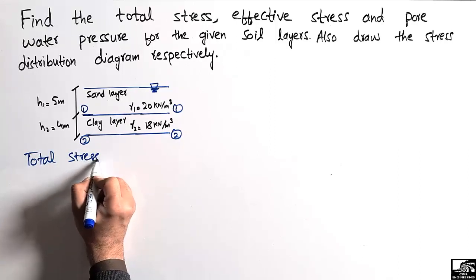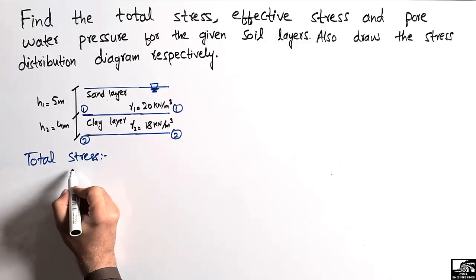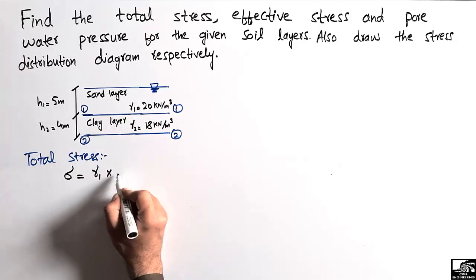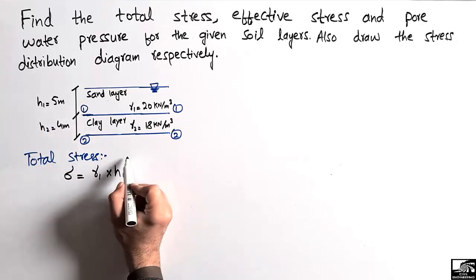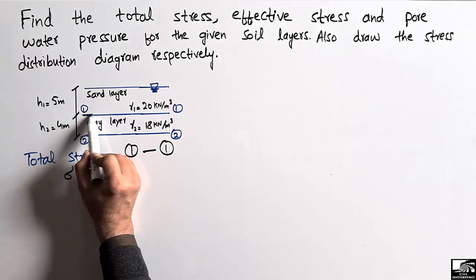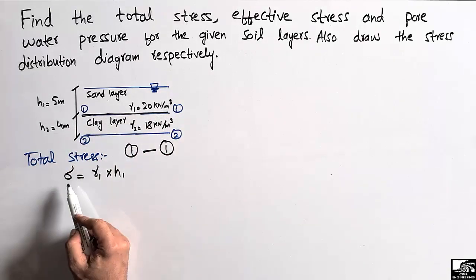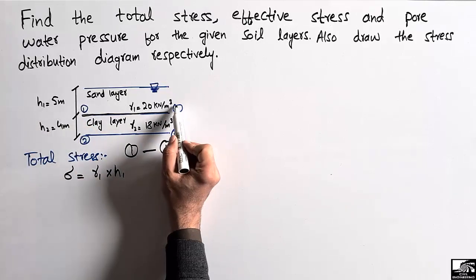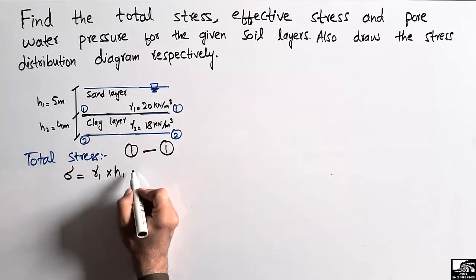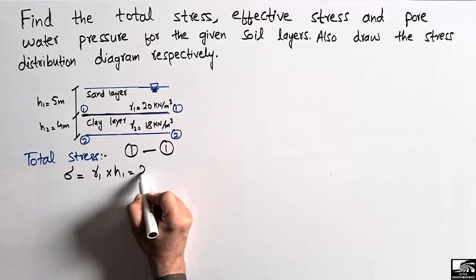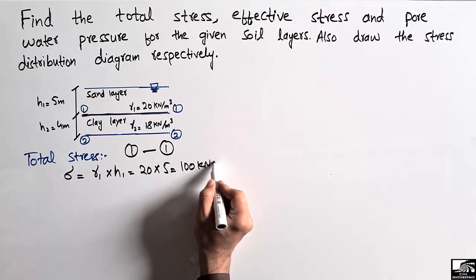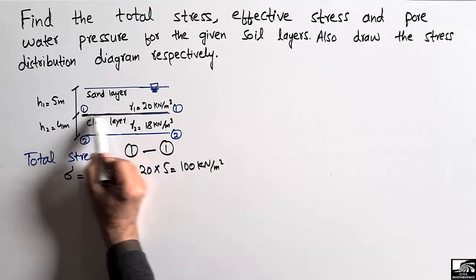First we find the total stress. The total stress sigma equals gamma one multiplied by height h1. At section 1-1, gamma one is 20 kN/m³ and h1 is five meters, so total stress equals 20 multiplied by 5, which comes out to be 100 kN per square meter. This is the total stress at section 1-1.